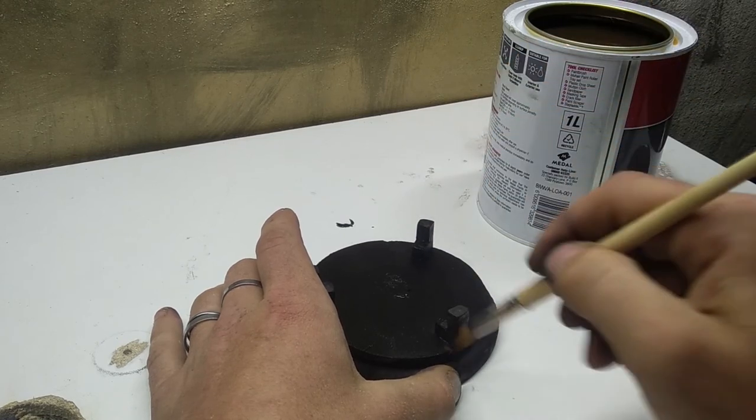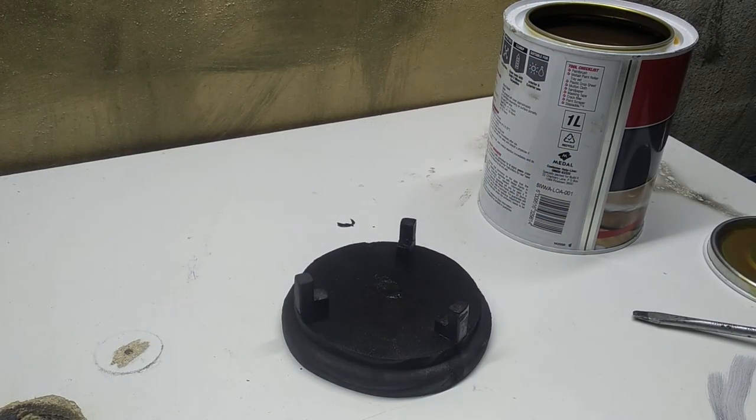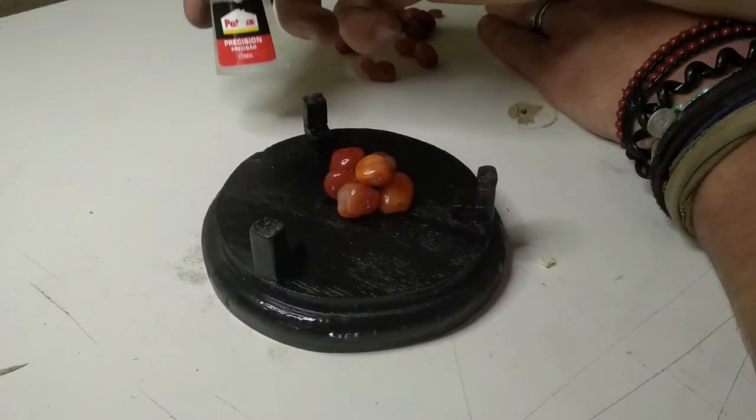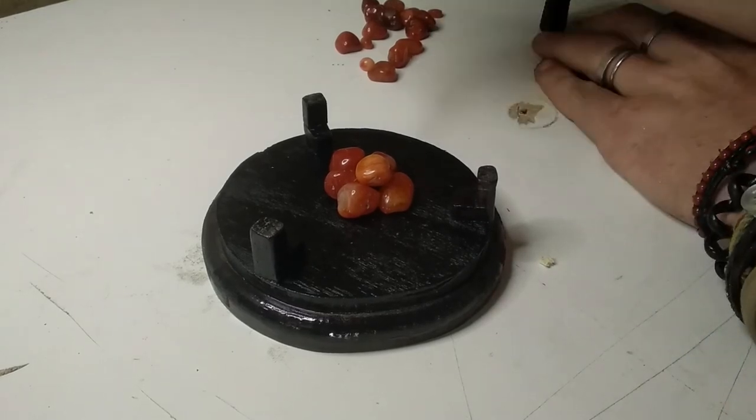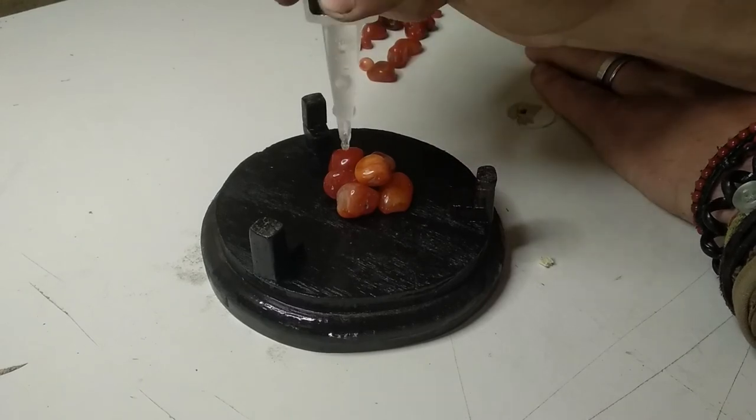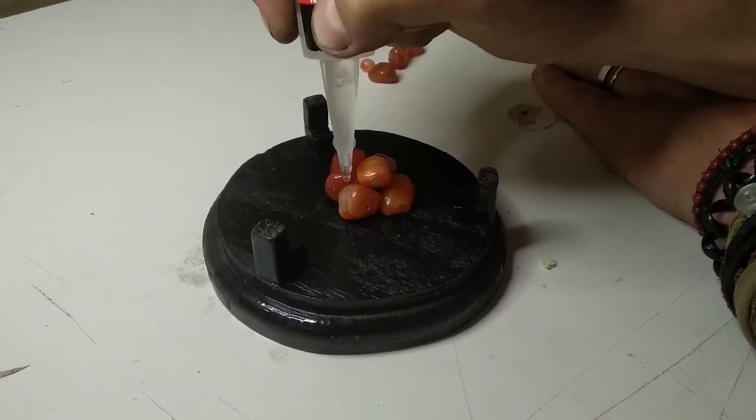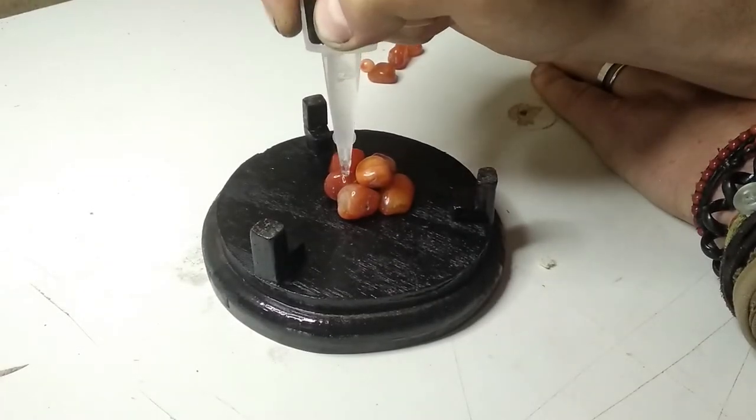We decided to make some sort of feature in the middle of the backflow burner and so again we politely acquired some gemstones from my wife and superglued them all together in place on the base of the backflow burner. This is just to break up the smoke and give it an interesting effect at the end of the day.